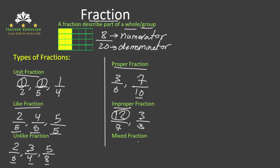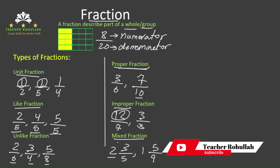The last type of fraction is mixed fraction. A mixed fraction is a combination of a whole number and a proper fraction. For example, 2 and 3 fifths, or 1 and 5 ninths. So 2 and 3 fifths and 1 and 5 ninths are mixed fractions.